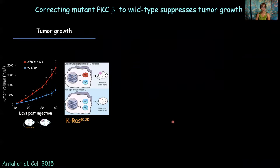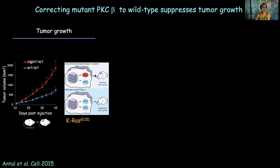To show that PKC is functioning in a tumor-suppressive manner, Corina took the DLD1 colon cancer cell line, which has an inactivating point mutation in PKC-beta in the kinase domain. She CRISPR-corrected that bad allele to a good allele and showed in a xenograft model that correcting bad PKC to good PKC suppressed tumor growth pretty significantly. Here's the parental cell line where the bad PKC causes a tumor — corrected to a good PKC, no tumor.